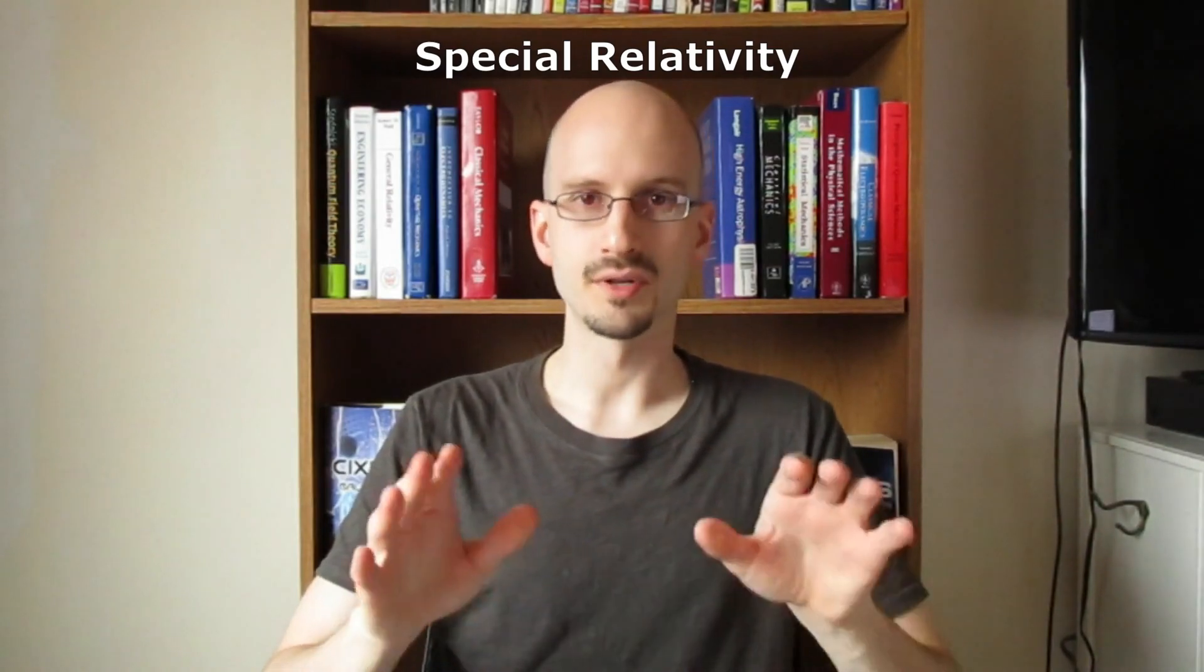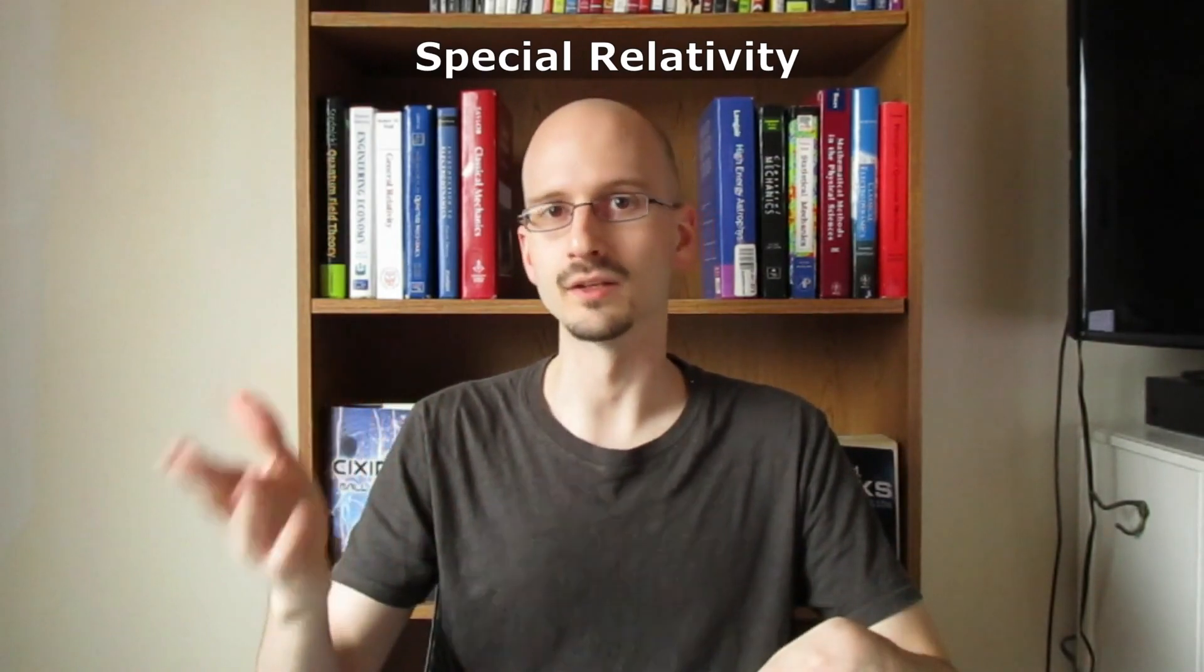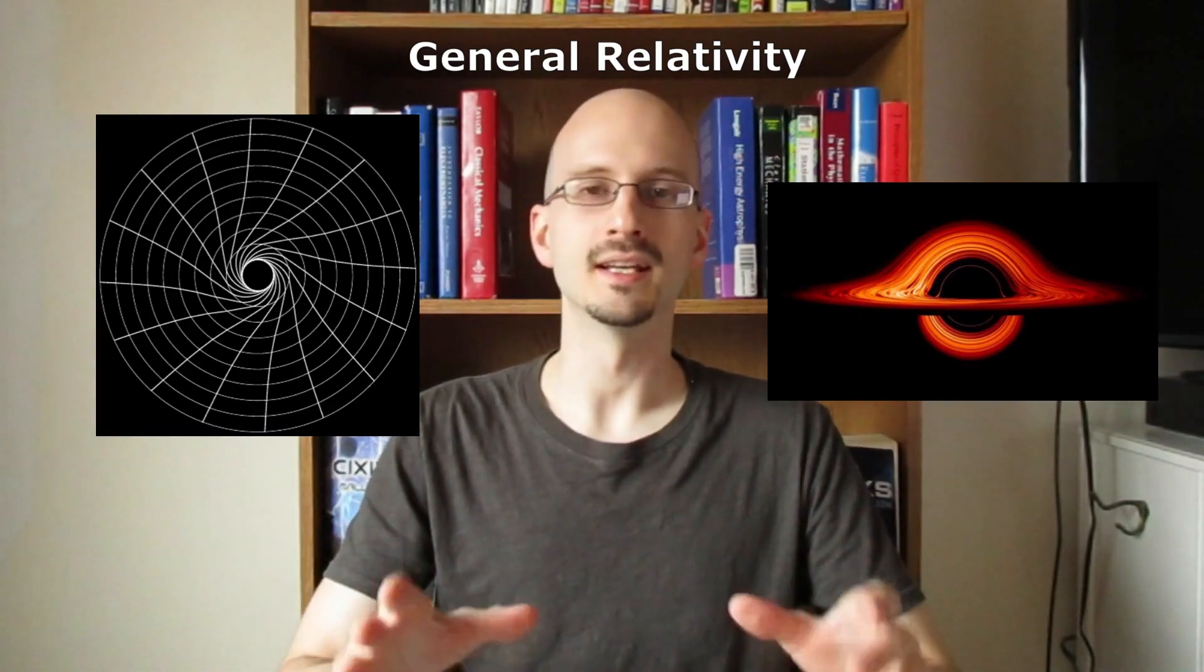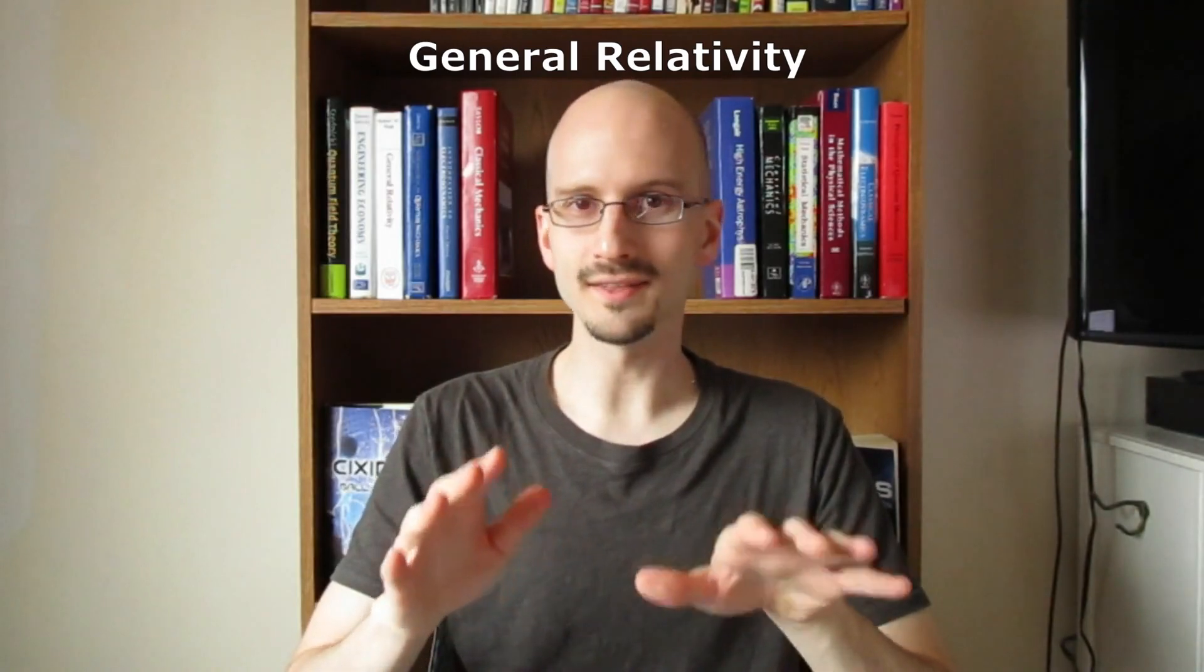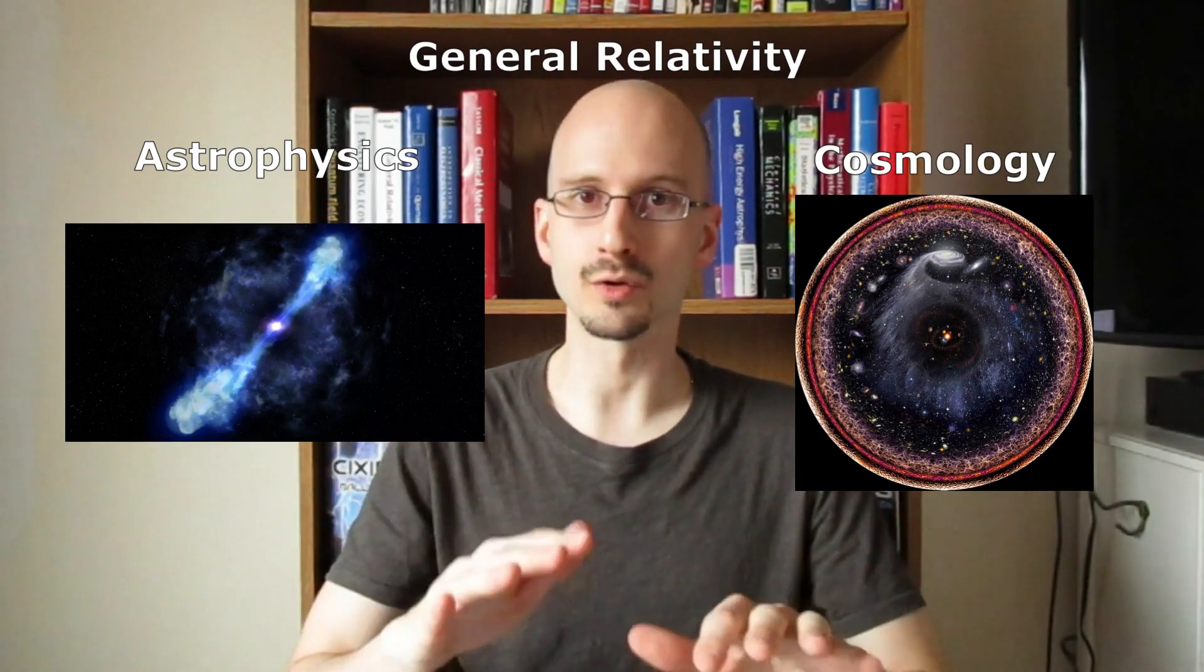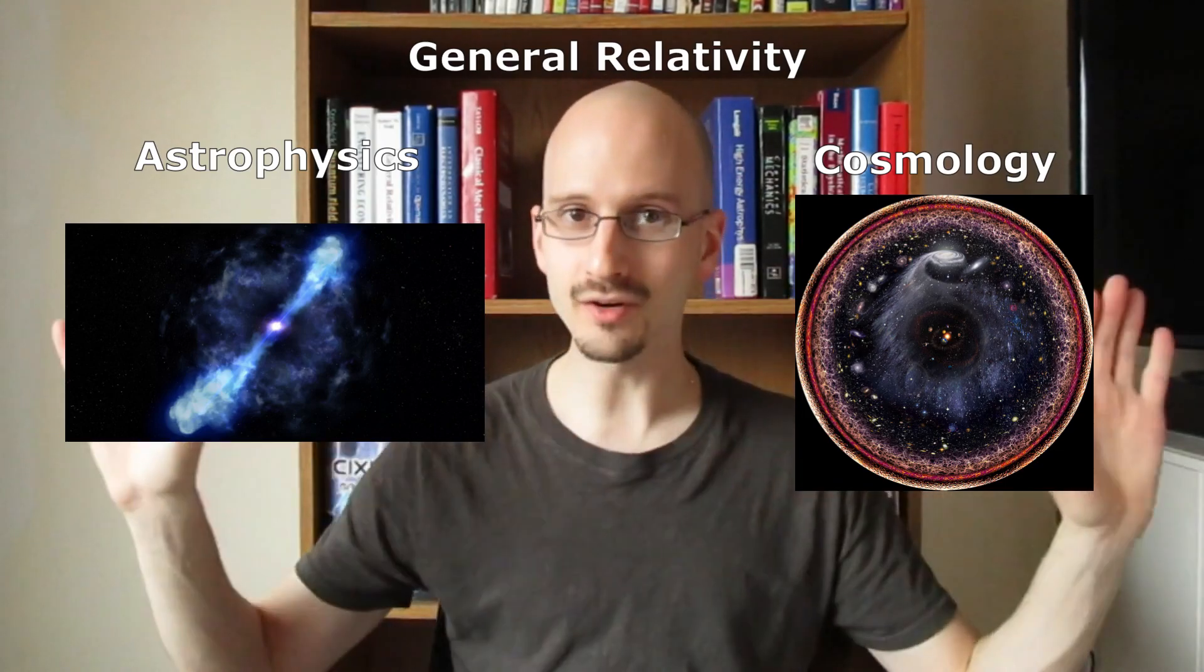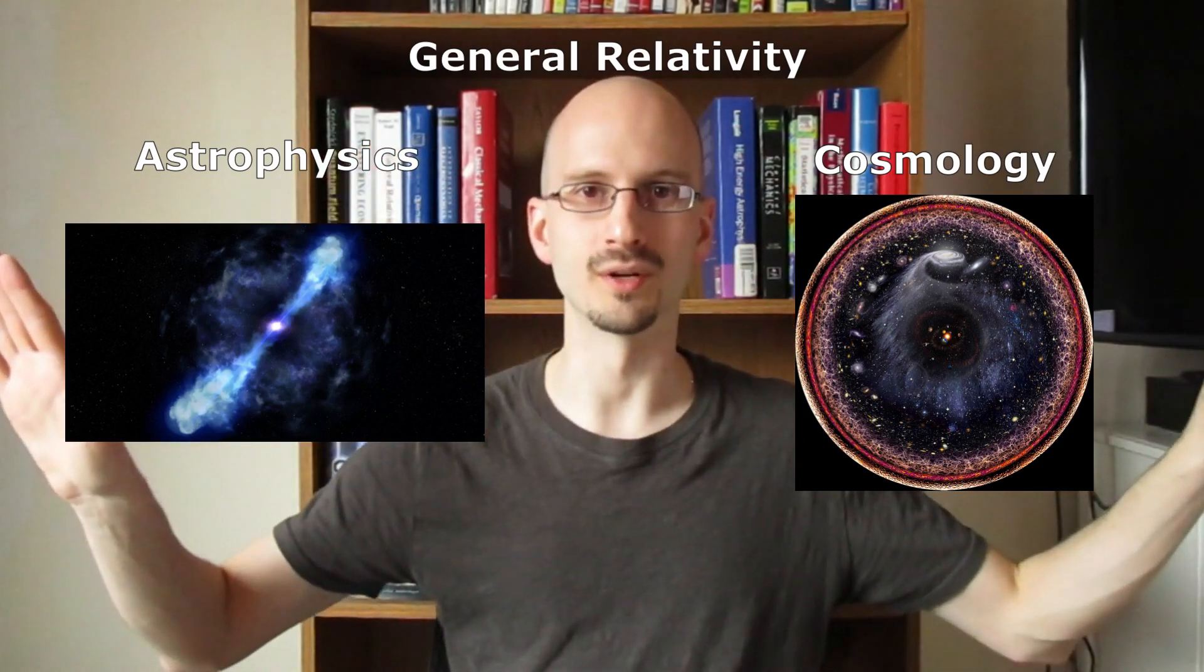Special relativity, as the name suggests, is a special case, particularly where there is no gravity. The full theory, which took Einstein longer to develop, is called general relativity, where gravity is described as a distortion of space and time. From general relativity came the sciences of astrophysics and cosmology. Finally, by treating gravity as a distortion of space-time, we're able to make theories about the entirety of the universe from beginning to end and out to the edges of known existence.